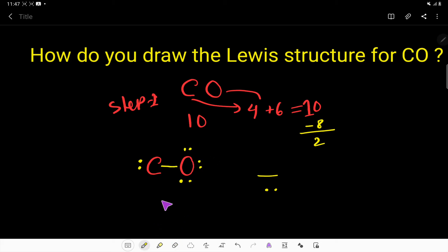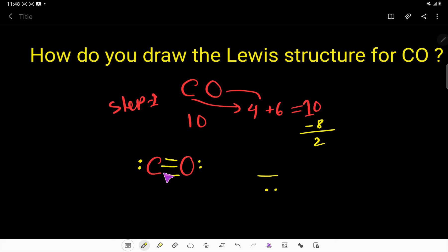Oxygen has eight valence electrons. Since carbon only has six, we can use another lone pair from oxygen to form an additional bond. Now carbon has eight valence electrons and oxygen has eight valence electrons. We have satisfied both atoms with a triple bond using all 10 valence electrons.